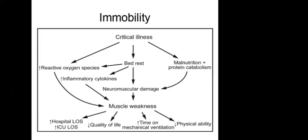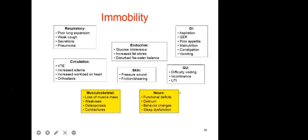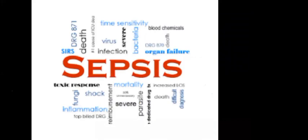Critically ill patients are immobile, leading to muscle weakness, increased ICU and hospital length of stay, reduced quality of life, prolonged ventilation time, and reduced physical ability. Early ambulation is essential — patients can start by sitting up in bed, then sitting out of bed, progressing to mobilization. This prevents not only DVT and PE, but also ICU-acquired myopathy and neuropathy.